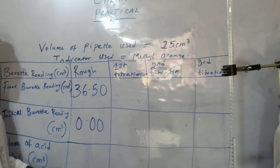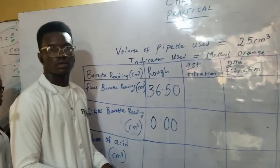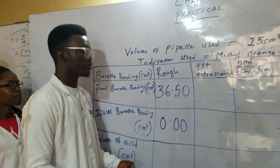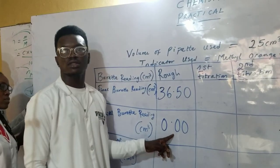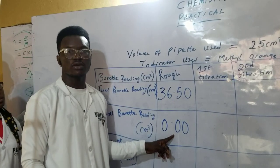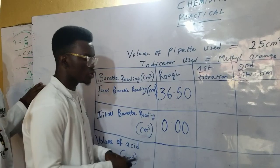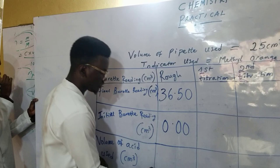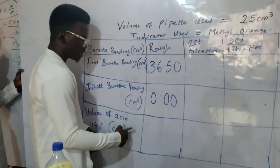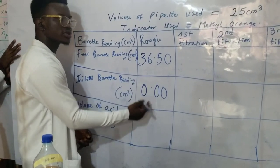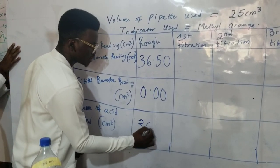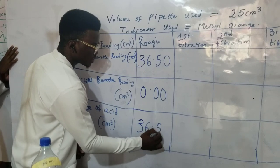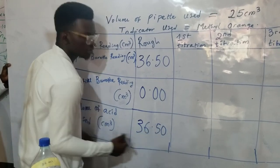That is our rough. We started with 0.00, which means our final reading is 36.50. So 36.50 minus 0.00 gives us our volume of acid used: 36.50 cm³.